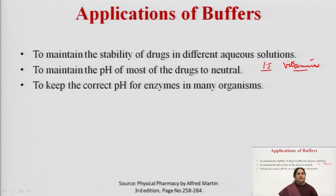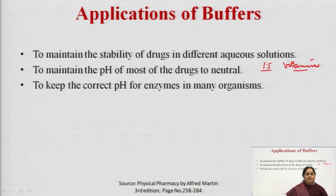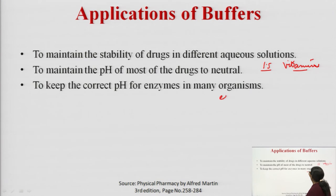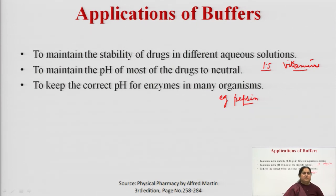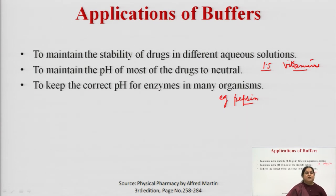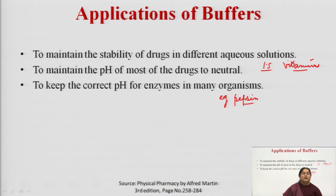We have to maintain the correct pH for enzymes in many organisms. For example, pepsin is active only within a certain range of pH; if the pH range is altered, the enzyme will get denatured. Since enzymes are also proteins, denaturation causes loss of structure and loss of activity. To keep enzymes in many organisms alive, the correct pH for enzyme activity must be maintained. These are some of the applications of buffers in the pharmaceutical industry.